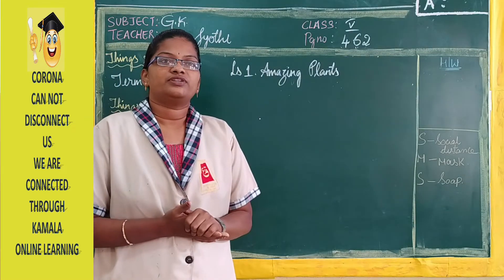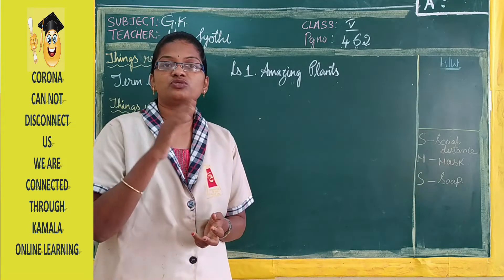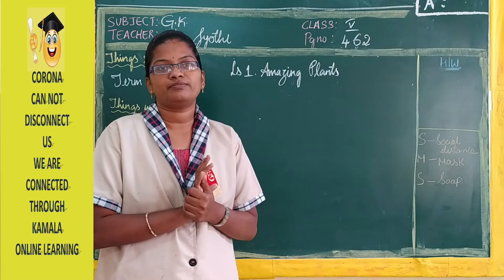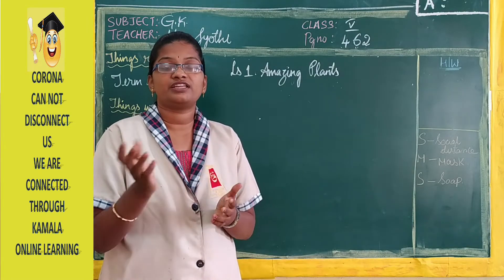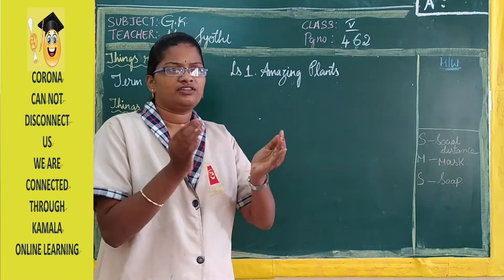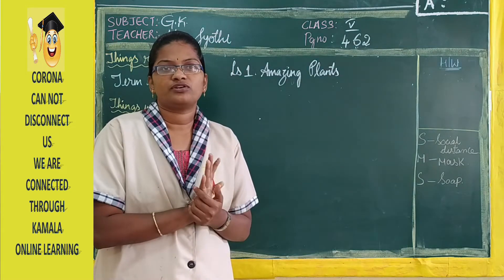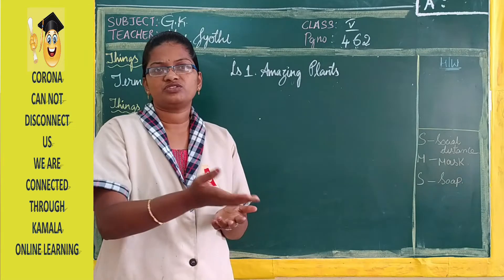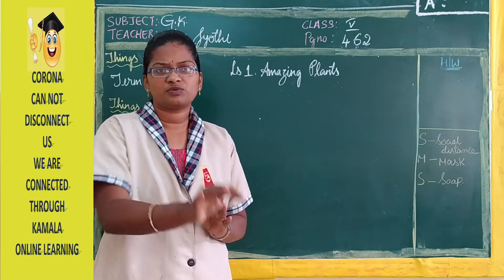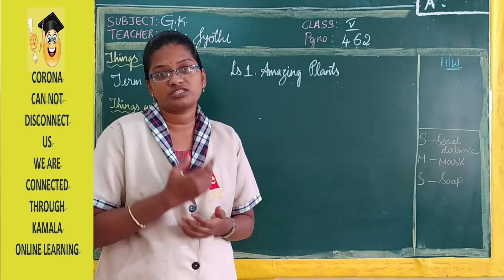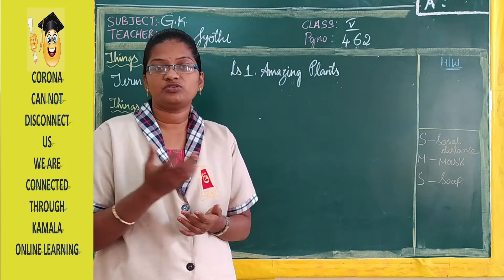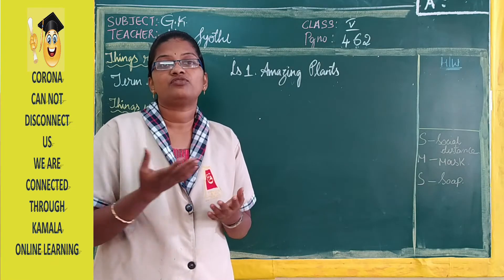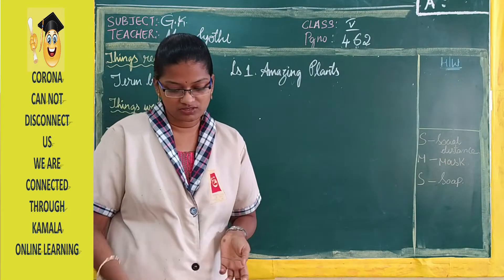In this world, wherever you look, there are so many different types of plants. All plants are not the same size or shape, and their uses are also different. Some plants, like desert plants or roadside plants, have no direct use but they give us oxygen. Whereas other plants are very useful — they give us fruits, vegetables, and seeds.